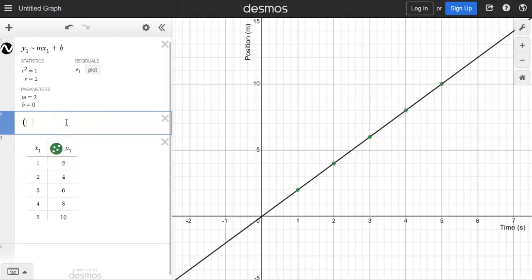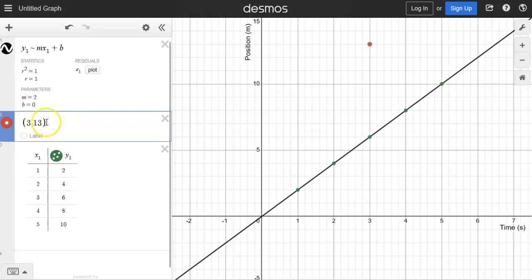So I'm going to do a parenthesis, 3, 13. Okay, and then I'm going to click label, and then I'm going to type in right here, position versus time. Okay.